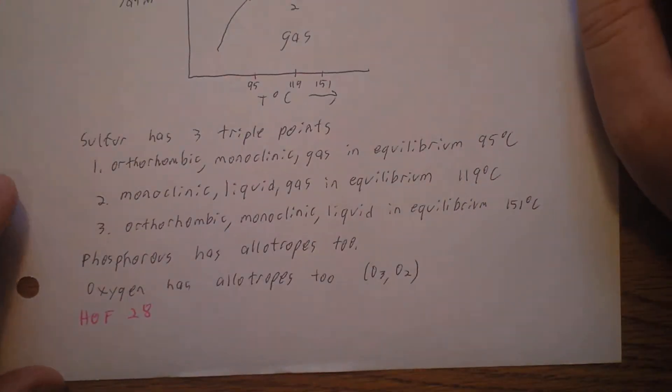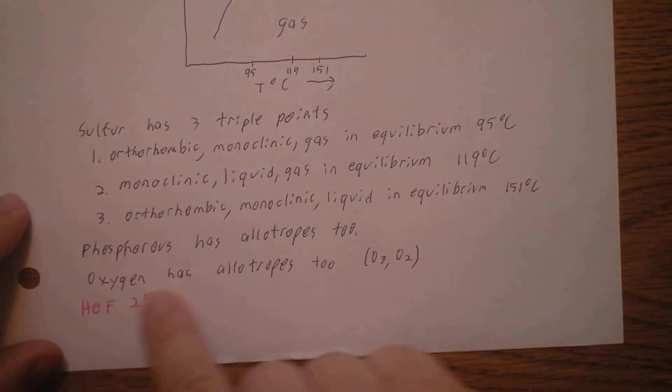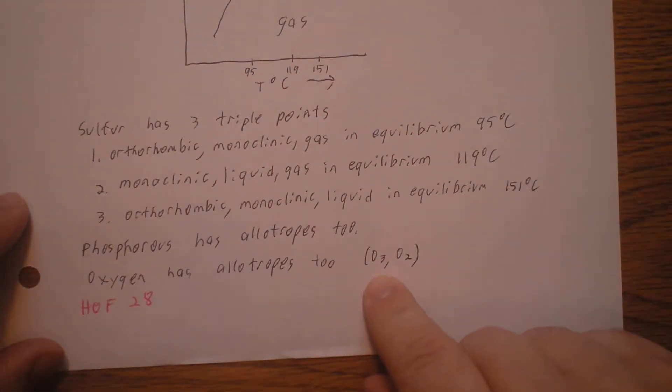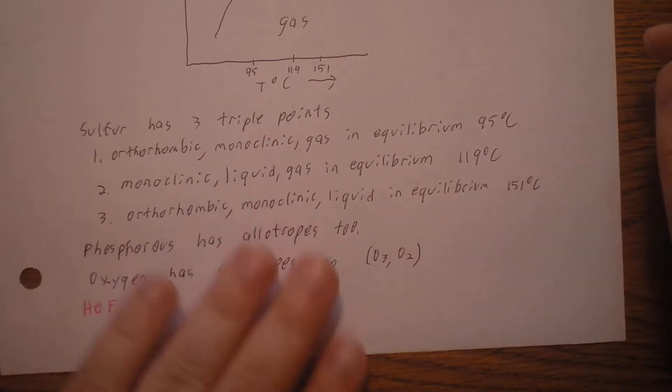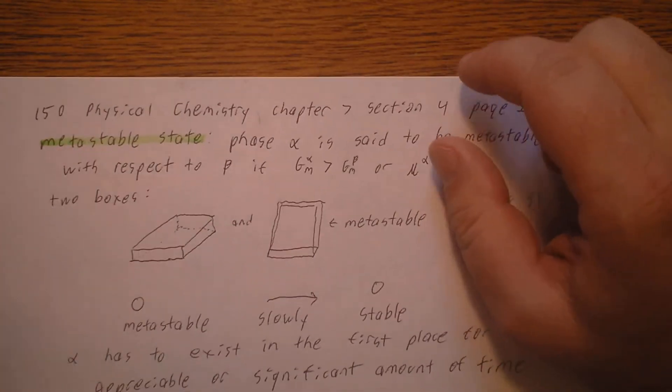Phosphorus has allotropes also, and ozone obviously has allotropes because in the gas phase there's O2 and O3. So it doesn't have to be the solid phase.